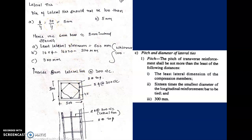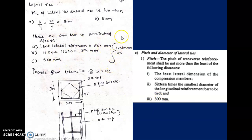Now we design the lateral ties, which are like stirrups for beams but for columns. The diameter of lateral ties should not be less than: the least lateral dimension criterion, 16 times the smallest longitudinal bar diameter (16×20 = 320 mm), or 300 mm — whichever is least. Since 300 mm is the least, we provide 8 mm diameter lateral ties at 300 mm center to center.